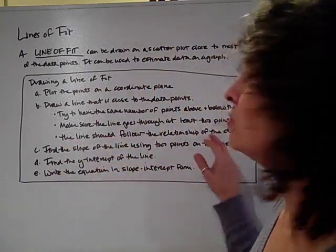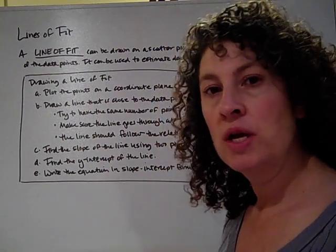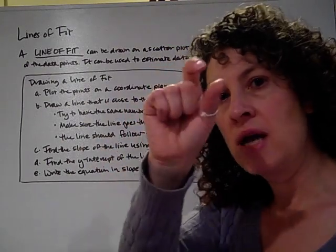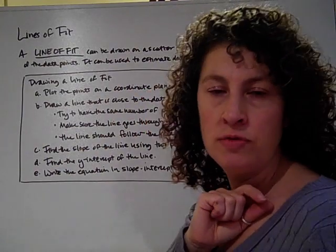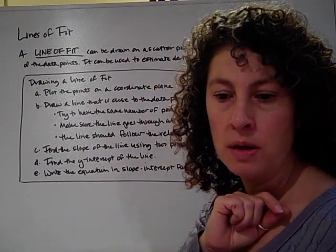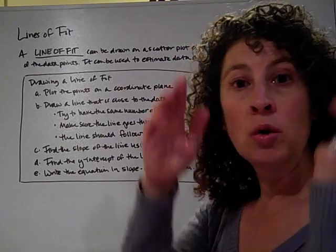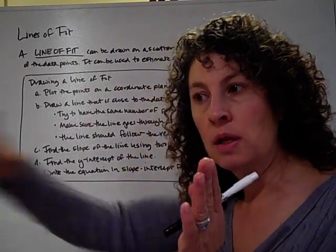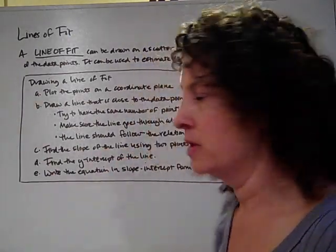And the line should follow the relationship of the data. I don't want my data to be going one way and my line to be going another way. If you imagine you've gone to the water park and you're going on the lazy river, we want to be kind of in the middle of the river. We don't want to suddenly leave the river and go off and run into the pavement.